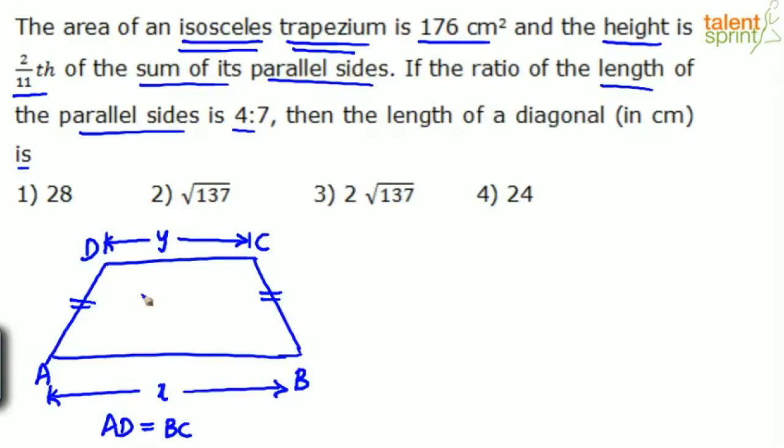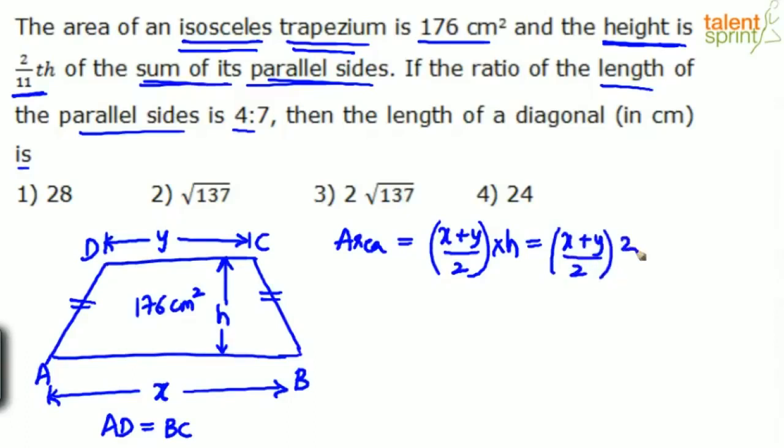And he says the area of this trapezium is 176 cm². Now you know that area of a trapezium can be taken as average of the parallel sides. So parallel sides are X and Y. What is the average of the parallel sides? X plus Y by 2 into the height H. Let us assume the height of the trapezium is H. It says height is 2/11 of the sum of its parallel sides. So this can be taken as X plus Y by 2 into 2/11 into X plus Y. 2 and 2 gets cancelled. So finally we can say X plus Y whole squared divided by 11 equals the area.